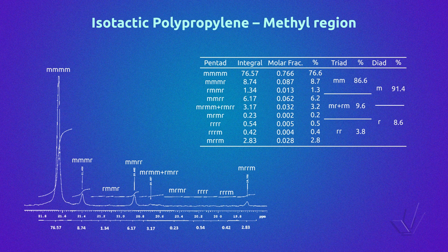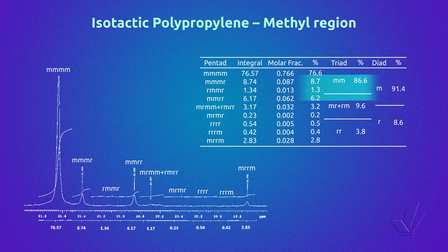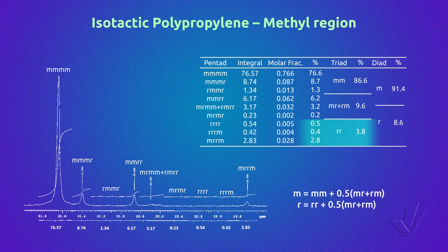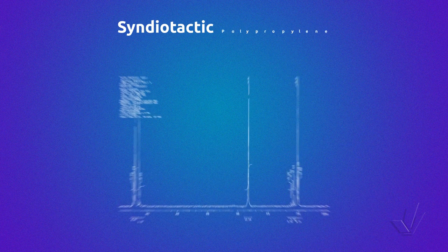If we want to have the percentage in triads, we add the percentages of the pentads centered in MM to obtain MM, the pentads centered in MR and RM to obtain the triad MR+RM, and the pentads centered in RR to obtain the triad RR. To have the diad percentage, we use the equation that relates diads with triads. In this example, the polypropylene is 91.4% isotactic in diads.